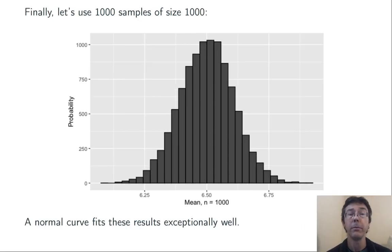Finally, let's do samples of size 1,000. Now a normal curve is going to fit this plot exceptionally well. Additionally, notice that most of the results are going to lie between 6.25 and 6.75. Once again, we're seeing the standard deviation of the sample mean shrinking.